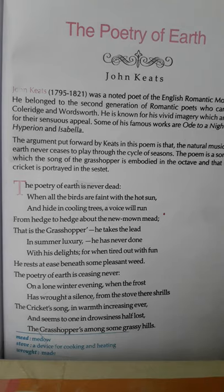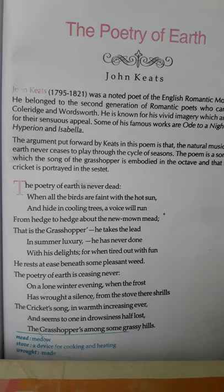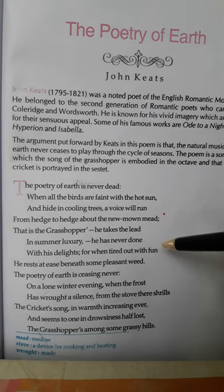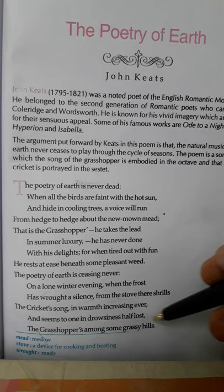Let us discuss the structure of the poem 'The Poetry of Earth.' This poem is a Petrarchan sonnet divided into an octave and a sestet. The octave part can be divided into two quatrains, each followed by the ABBA rhyme scheme. So the rhyme pattern of the whole poem is ABBA, ABBA, CDE, CDE.